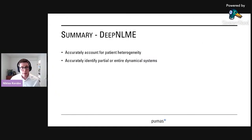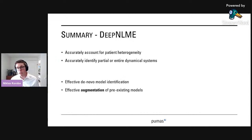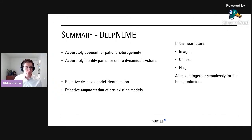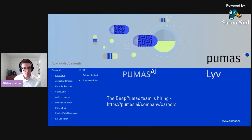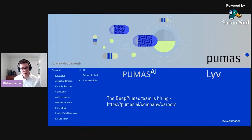In summary, with deep NLME we can accurately account for patient heterogeneity, and identify partial or even entire dynamical systems. We hope to make effective de novo model identification possible, as well as effective augmentation of pre-existing models where you already have a lot of information and just want to squeeze a little extra power out of modeling. In the very near future, we'll be looking at using entire images, omics, and other mixed data seamlessly to make the best predictions possible. I'd like to thank Chris Elrod and Julius Martensen, and note that the Deep Pumas team is hiring — two positions are open.